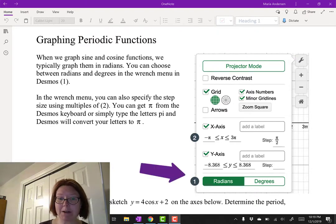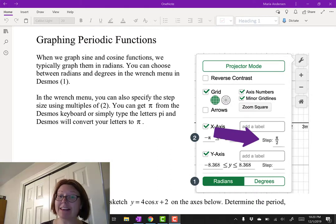Radians and degrees are the buttons at the bottom. In the wrench menu you can also specify the step size of the graph. That's how often the tick marks appear on the x-axis.